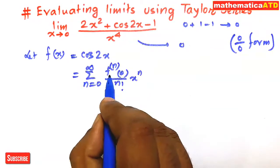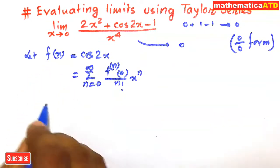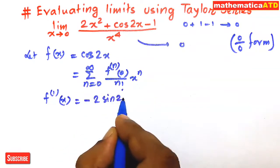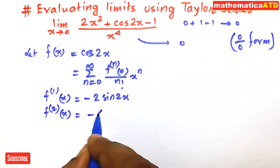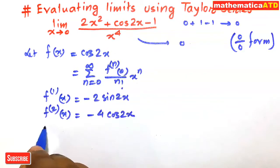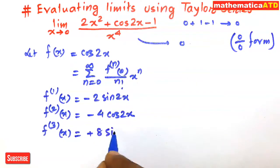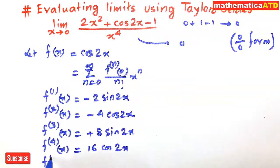Here fⁿ(0) is the nth derivative of f(x) evaluated at x = 0. The first derivative f'(x) = −2 sin(2x). The second derivative f''(x) = −4 cos(2x). The third derivative f'''(x) = +8 sin(2x). The fourth derivative f''''(x) = 16 cos(2x). The fifth derivative f'''''(x) = −32 sin(2x).